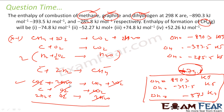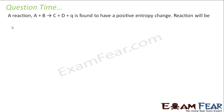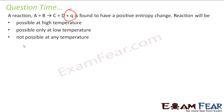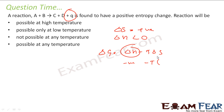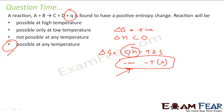A reaction A + B → C + D + heat is found to have a positive entropy change. The reaction releases heat, so delta H is negative. Delta G = delta H − T × delta S. With delta H negative and delta S positive, delta G is always negative regardless of temperature, so the reaction is always spontaneous.